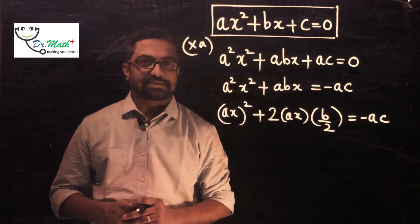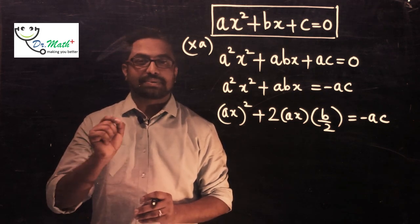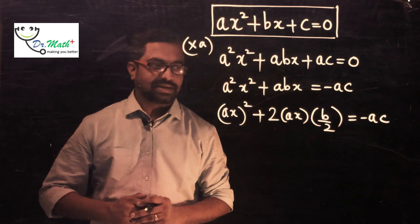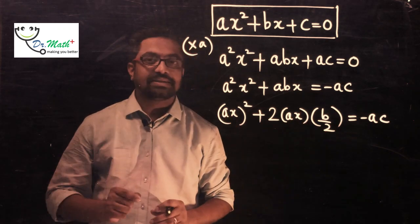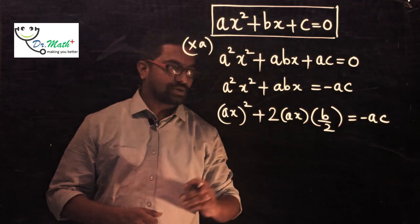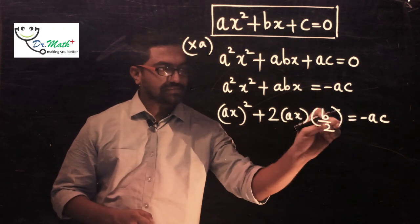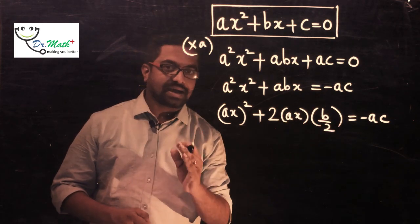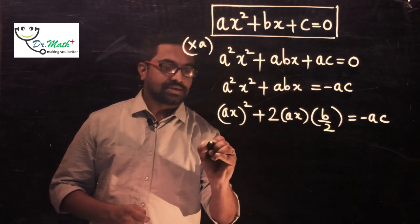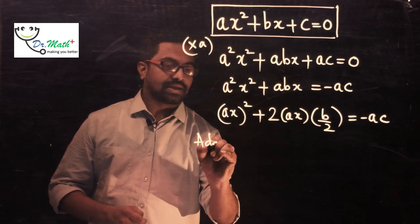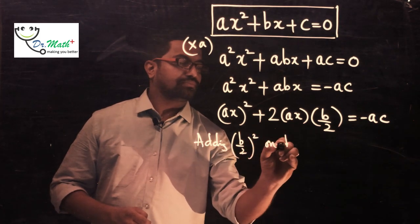You can recall the identity (a + b)² = a² + 2ab + b². Our expression looks like a² + 2ab, so what is missing? b² is missing. Here, b corresponds to b/2, so the square of b/2 is missing. Let's add (b/2)² on both sides in the next step.